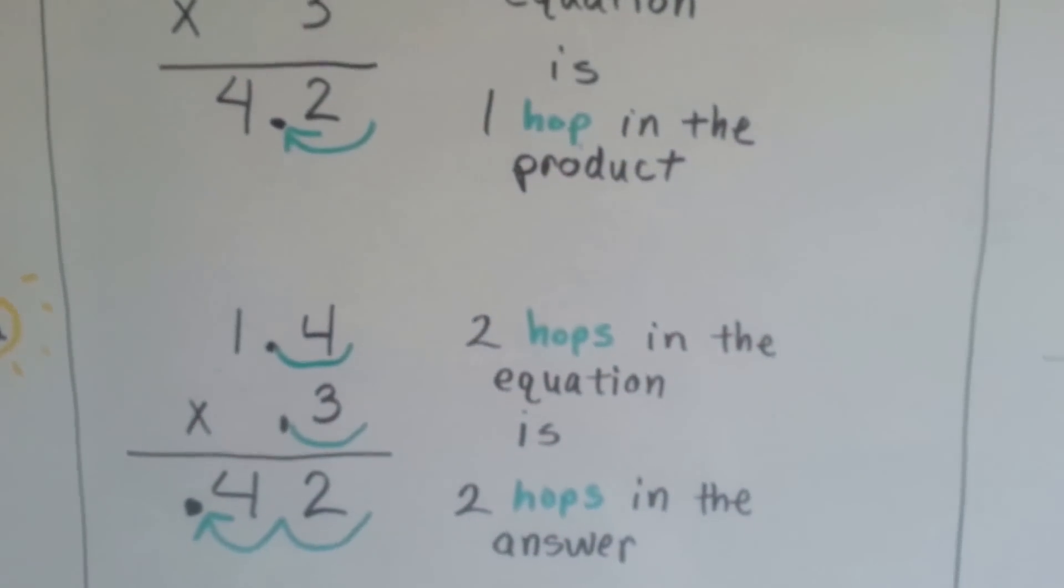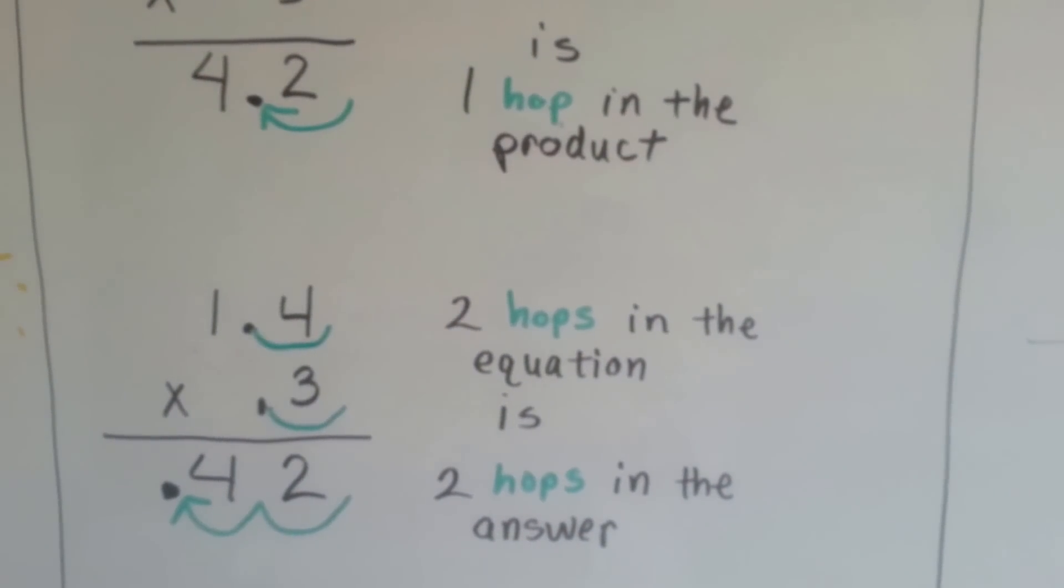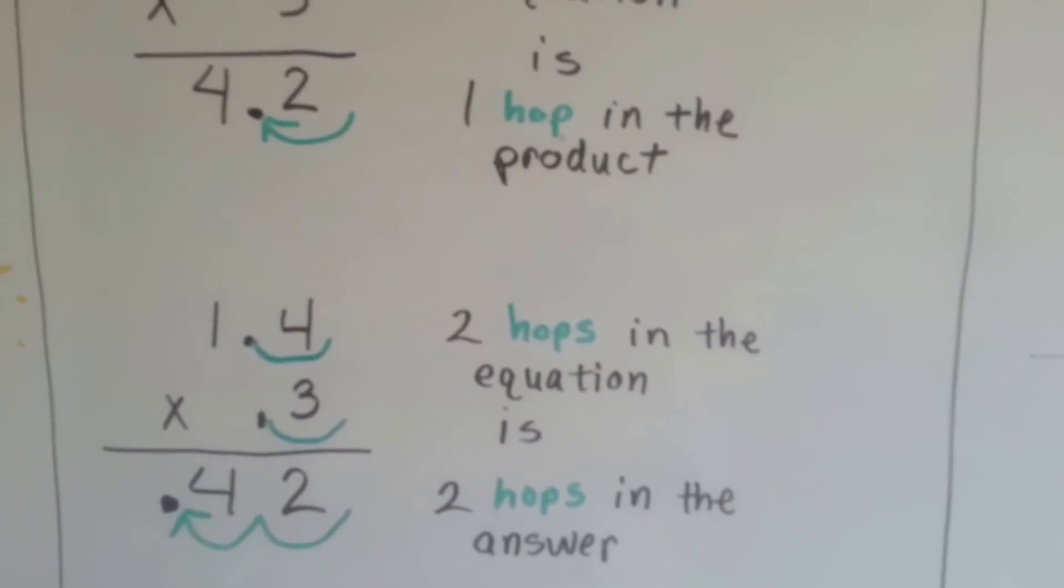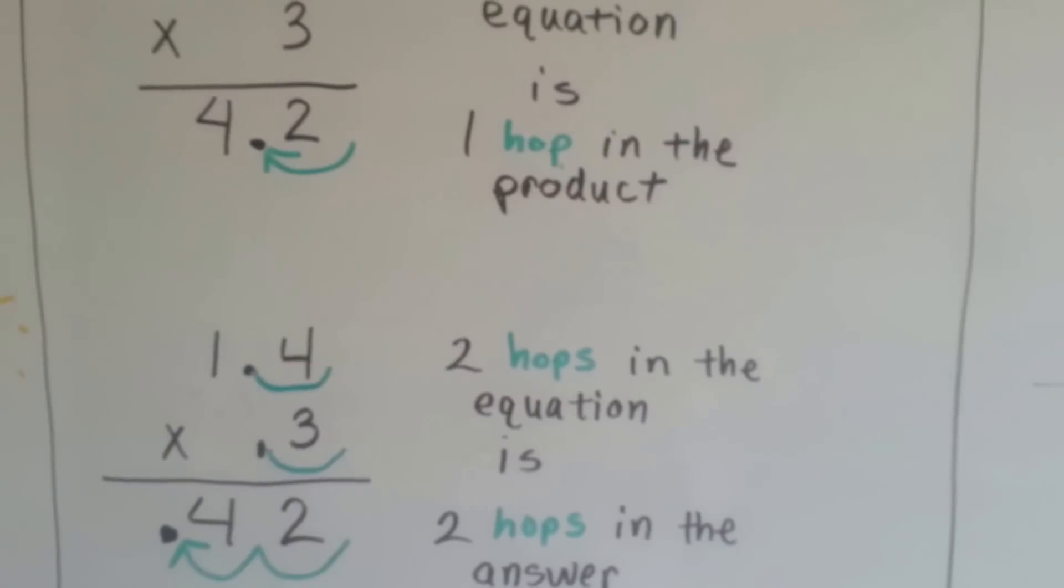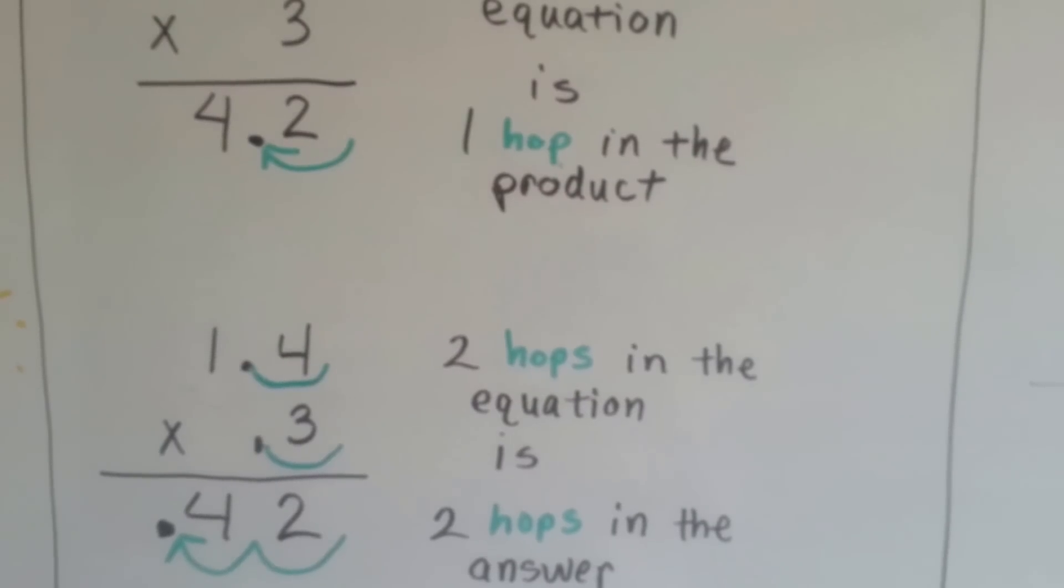When there's two hops in the equation, there's going to be two hops in the product. See? If we multiply the 1.4 by 0.3 now, instead of 3, we get 0.42. There's two hops.